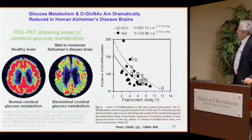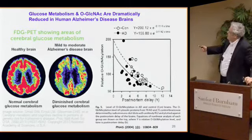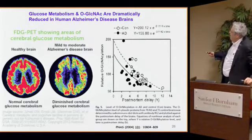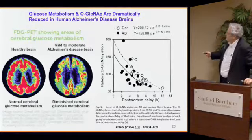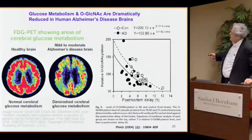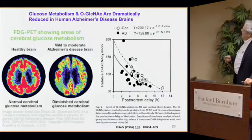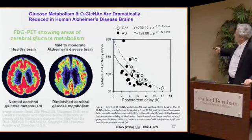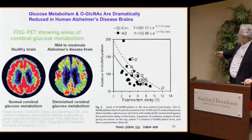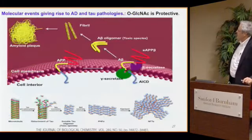Another area of emerging excitement is the potential usefulness of O-GlcNAc in treating disease. Some of us believe that Alzheimer's disease is primarily a defect in glucose metabolism. This has been around for a long time — if you do PET scans and look at glucose metabolism in a normal brain versus an Alzheimer's brain, it's markedly reduced. Recent studies out of Gong's lab in New York have shown in post-mortem human patients that O-GlcNAcylation in Alzheimer's brains is dramatically reduced as well, as you might expect since it's so dependent on glucose.